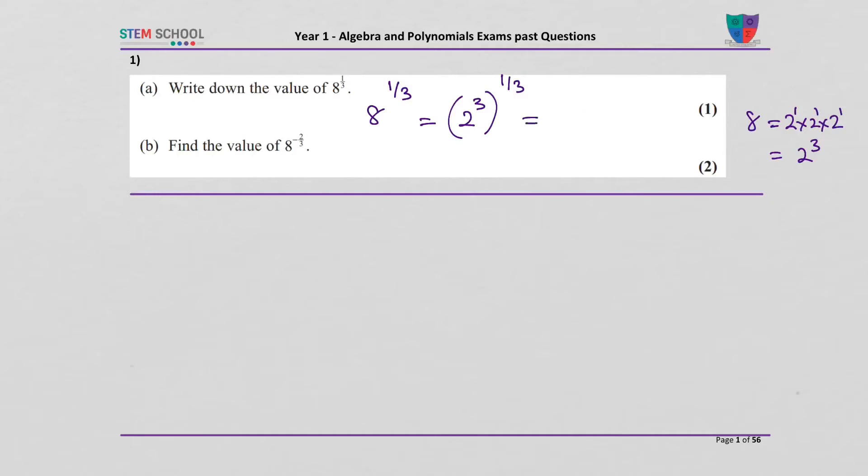That will be 2 to the power of 3 over 3, which is 2 to the power of 1, which equals 2.